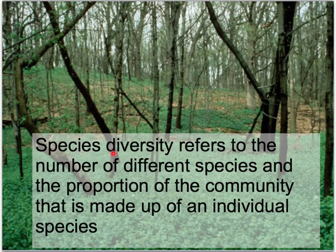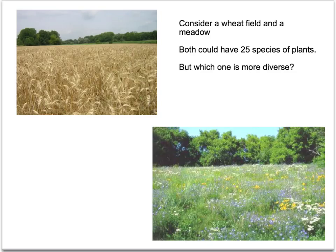So, species diversity then. It's the number of different species and the proportion of the community that is made up of an individual species. Let's consider this woodland here. The way you would calculate species diversity is by counting the number of different species within this ecosystem, or this community, or this habitat, and the number of individuals of each species as well. Let's consider this wheat field and this meadow. Let's say they are exactly the same size. Now, what I'm going to say is both could have 25 species of plants. That's not too hard to imagine here in the meadow. 25 different species of plants. You can see there's a lot of variety in there.